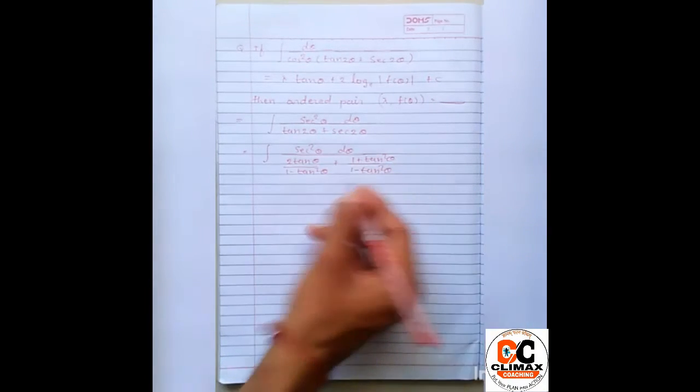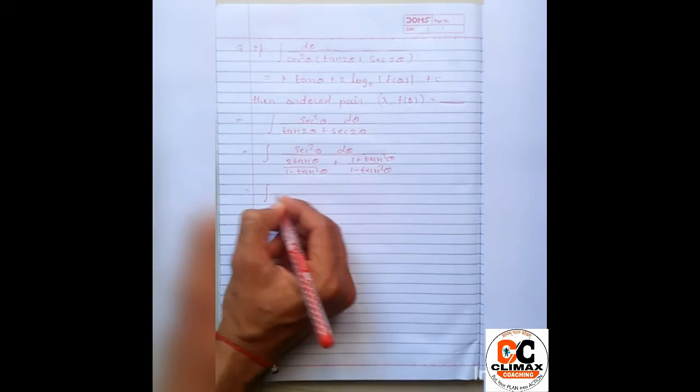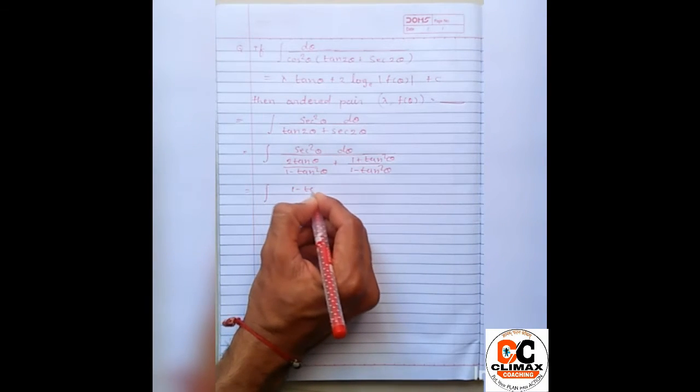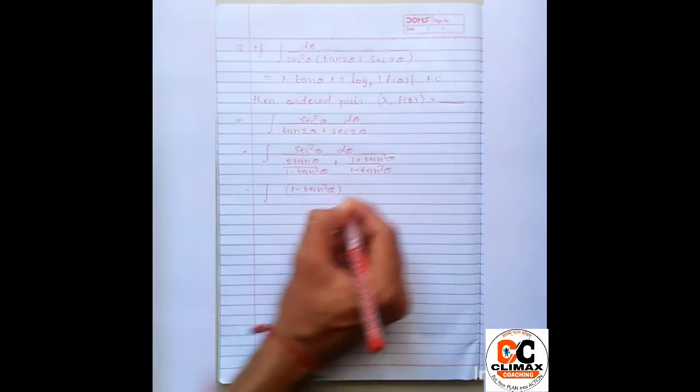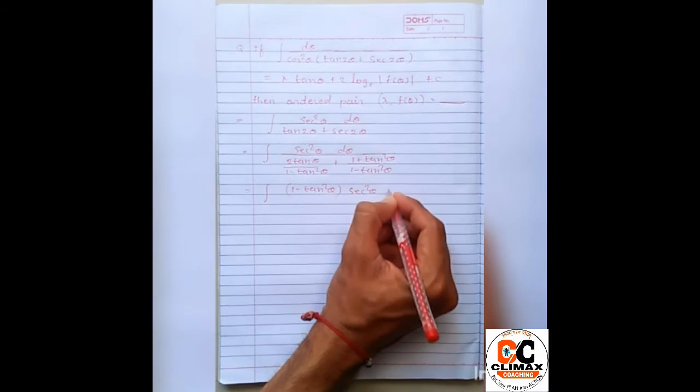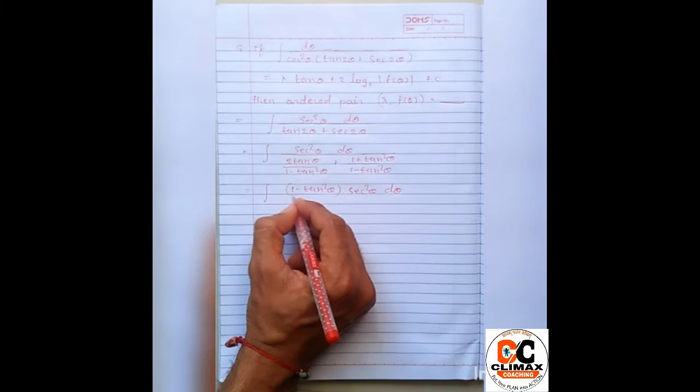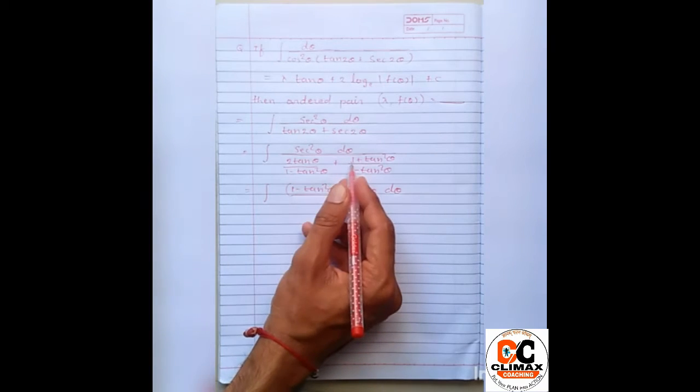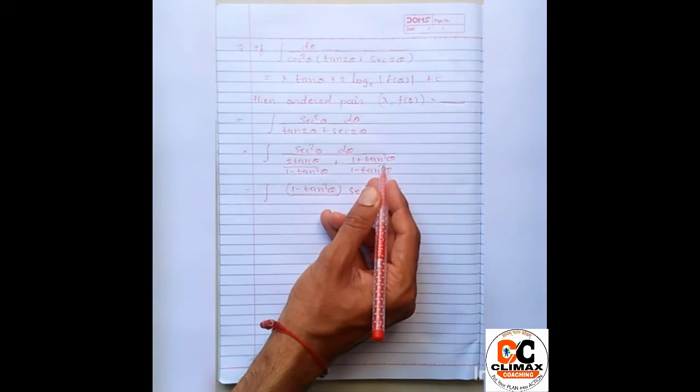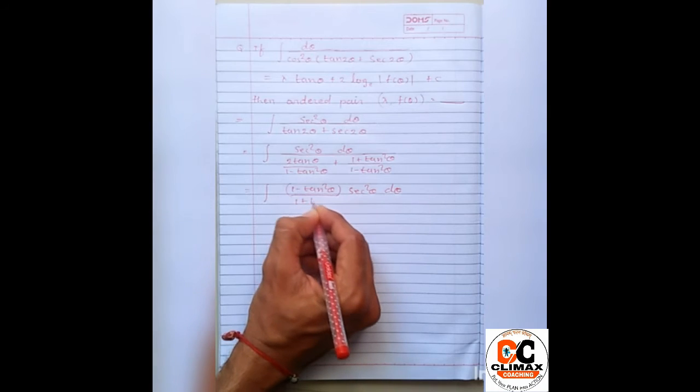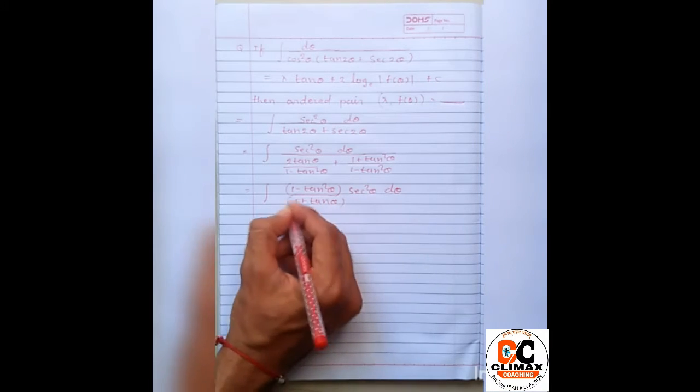Clear ab LCM mein hamare paas aa chuka hai 1 minus tan square theta wo upar aa jaega 1 minus tan square theta into sec square theta d theta divide by 2 tan theta plus 1 plus tan square theta it means 1 plus tan theta all square.